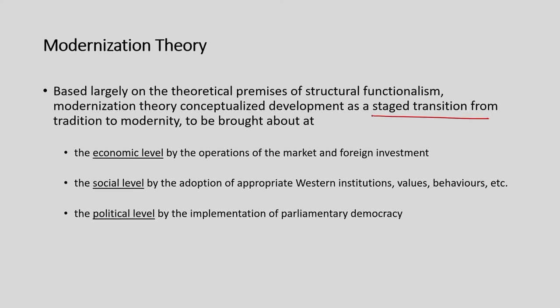Modernization theory attempts to treat tradition and modernity as dichotomies — as binaries. Such a staged transition to modernity from tradition may be brought about at three levels: economic, social, and political.